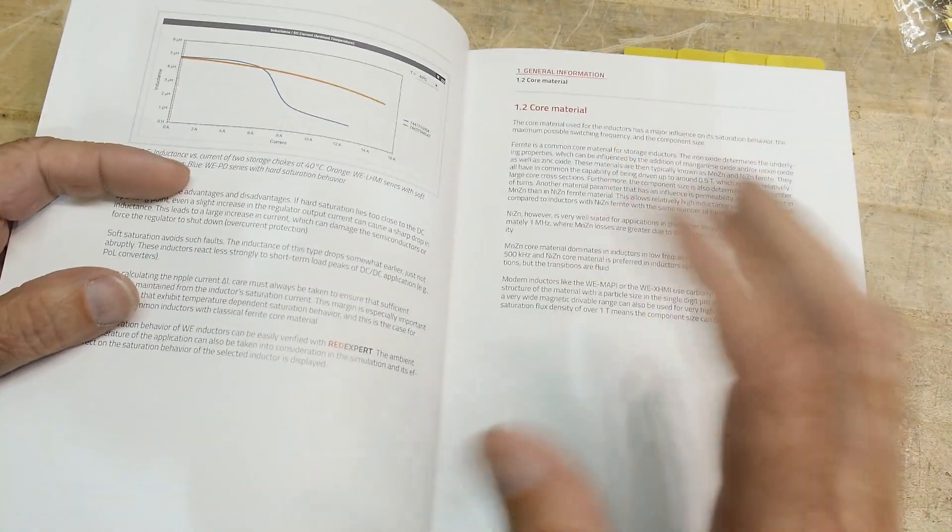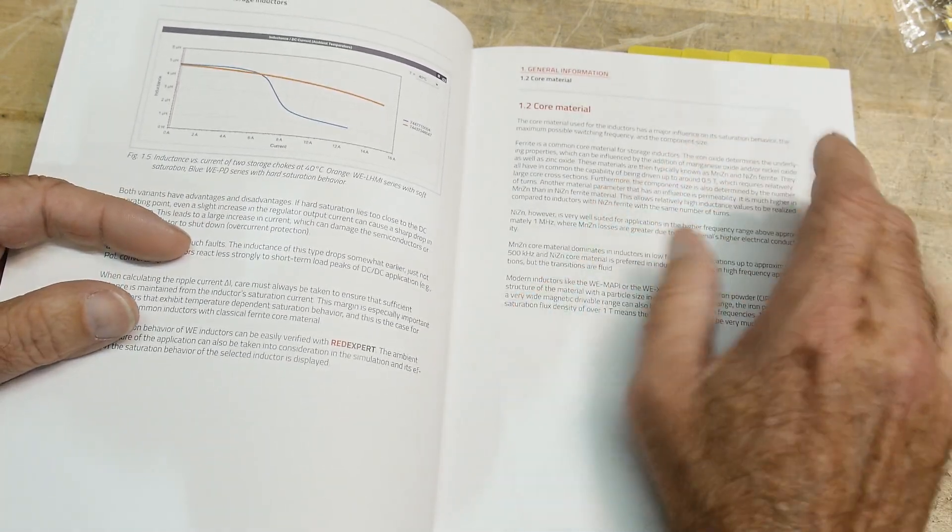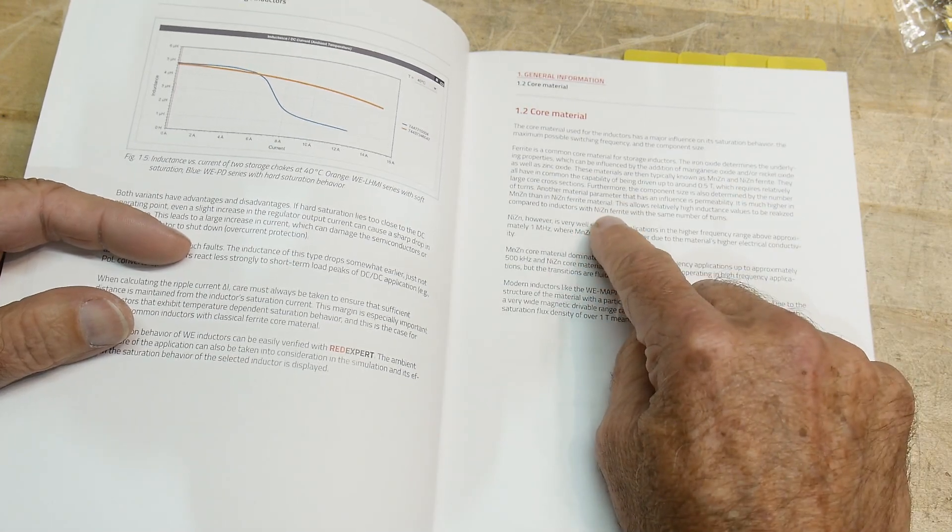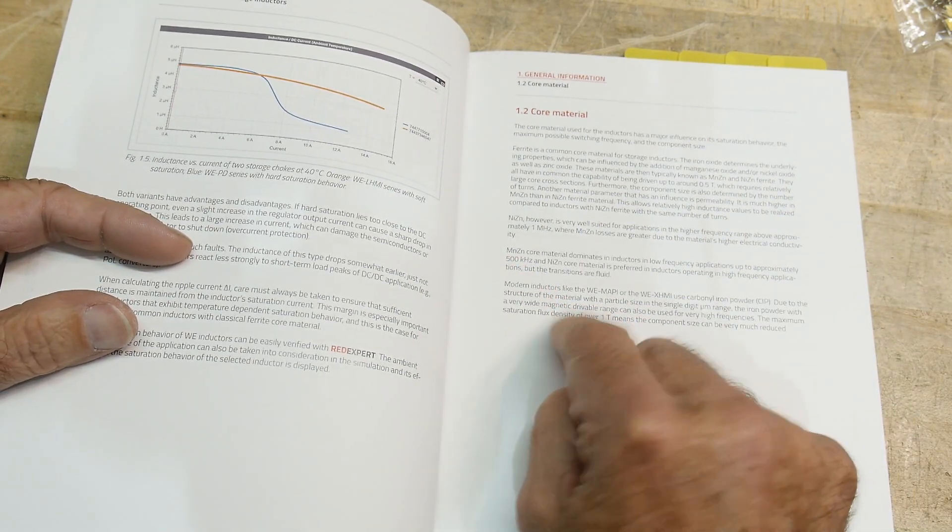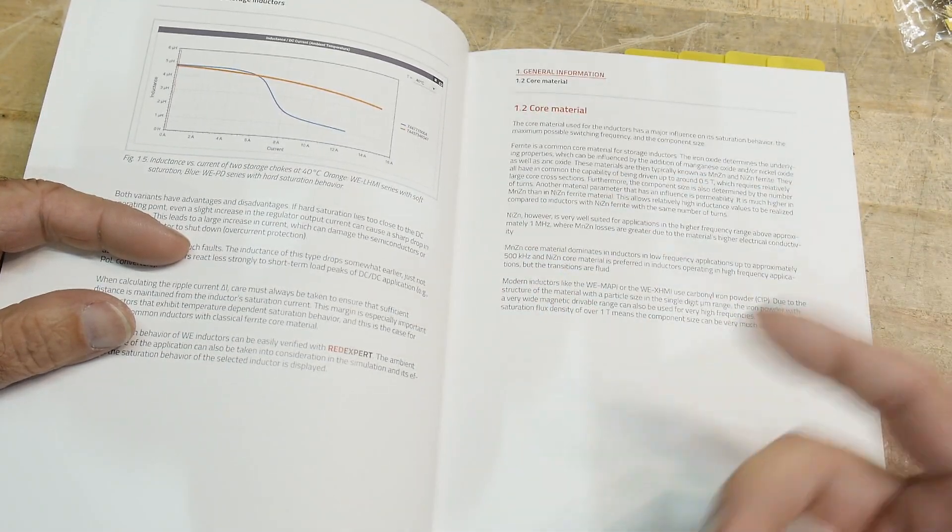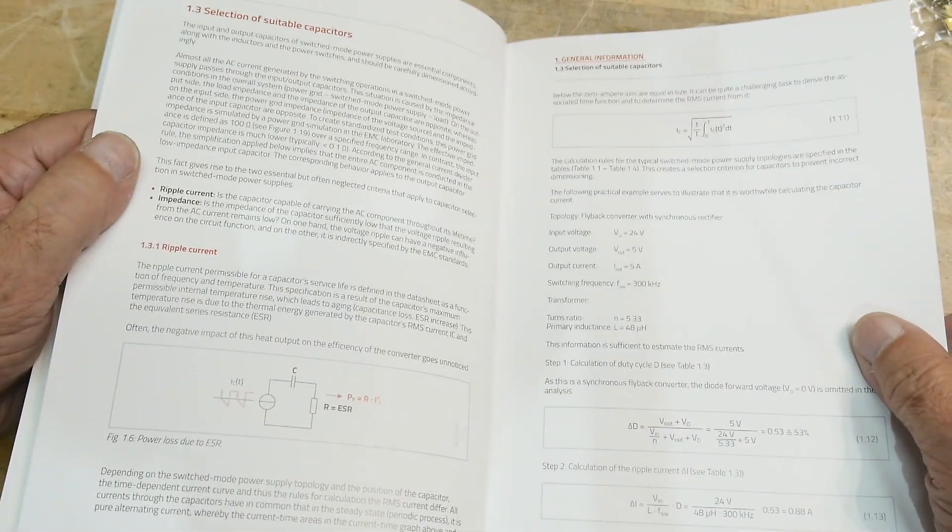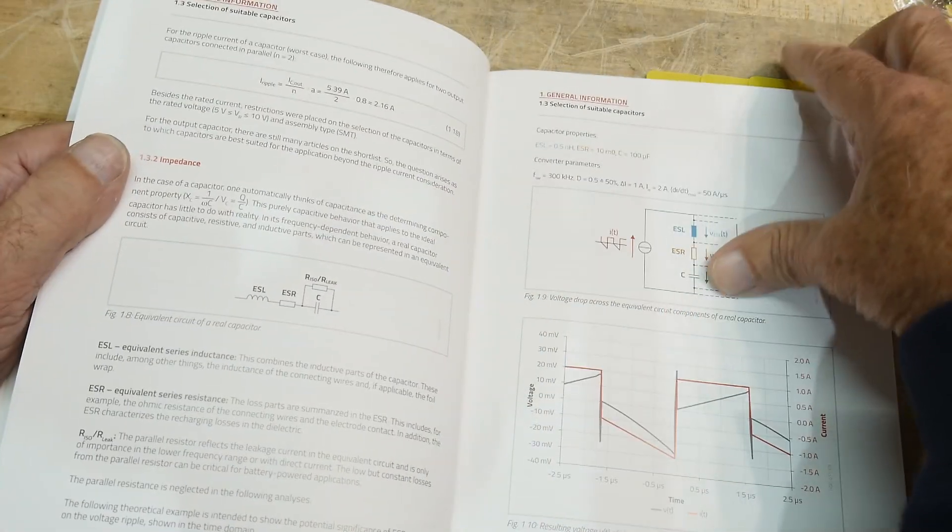They talk about a brief introduction. You think there's just ferrite and iron, and those are the only two types of cores. Well no, these days there are nickel zinc and magnesium zinc. There's a whole bunch of modern stuff that you probably don't know about. And then they go into the basic formulas for ripple current and waveforms.